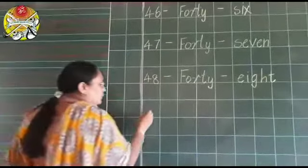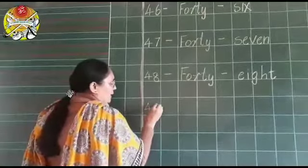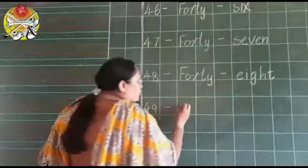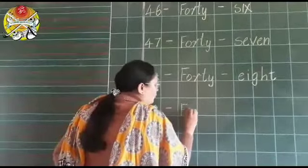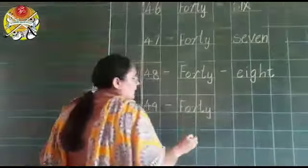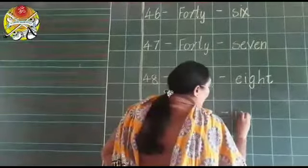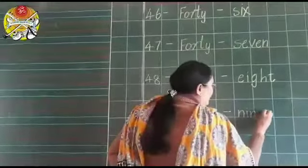Then, again leave one box and write. 49. Next box, dash. F-O-R-T-Y, 40. Next box, dash. And the spelling of 9, N-I-N-E, 9.